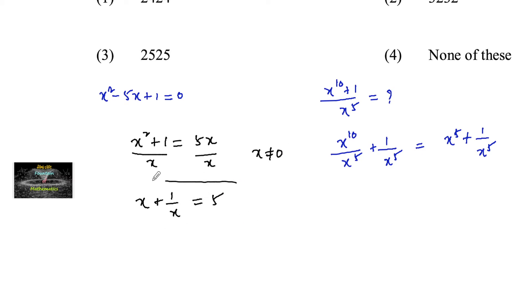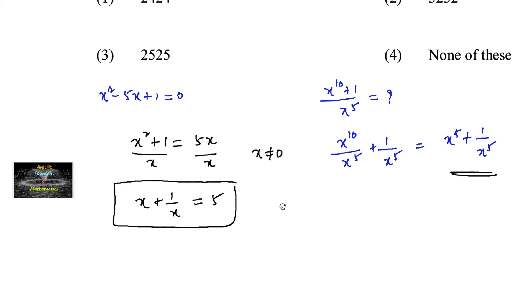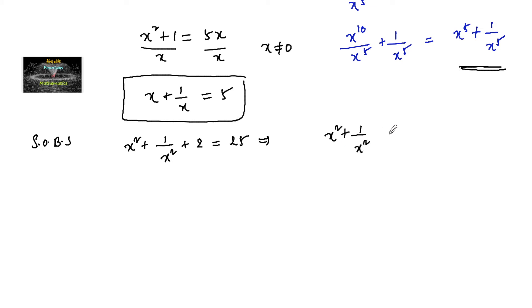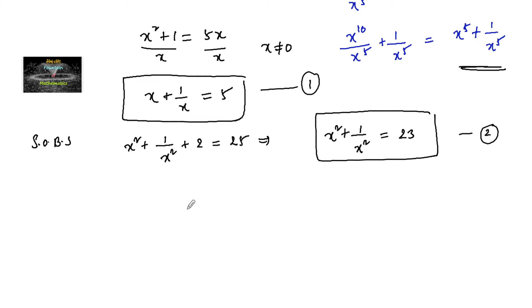We got x plus 1 upon x equals 5, and we need to find x power 5 plus 1 upon x power 5. Squaring both sides, we get x squared plus 1 upon x squared plus 2 equals 25, so x squared plus 1 upon x squared equals 23. Let this be equation 2.